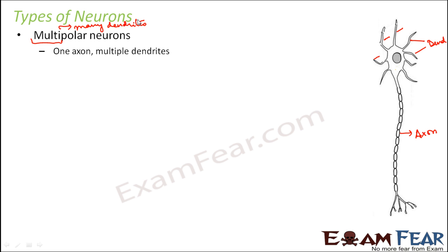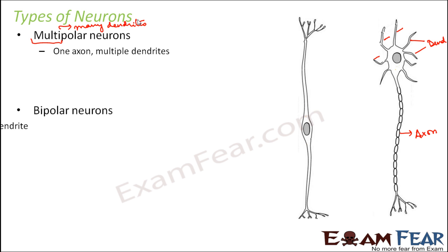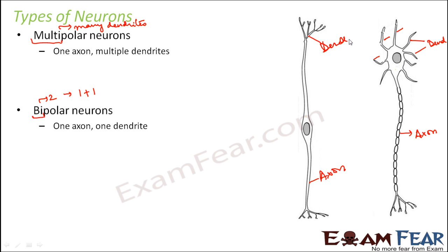If the dendrites are many, it is a multipolar neuron. If the dendrite is one in number, then it is a bipolar neuron — that means you have one axon and one dendrite, so two total. Bi means two: one axon plus one dendrite. On one side you have the axon, and on the other side you have the dendrite, with the cell body or cyton in between. So from the cell body, on one side you have the dendrites and on the other side the axon. Each branch can then have more branches.